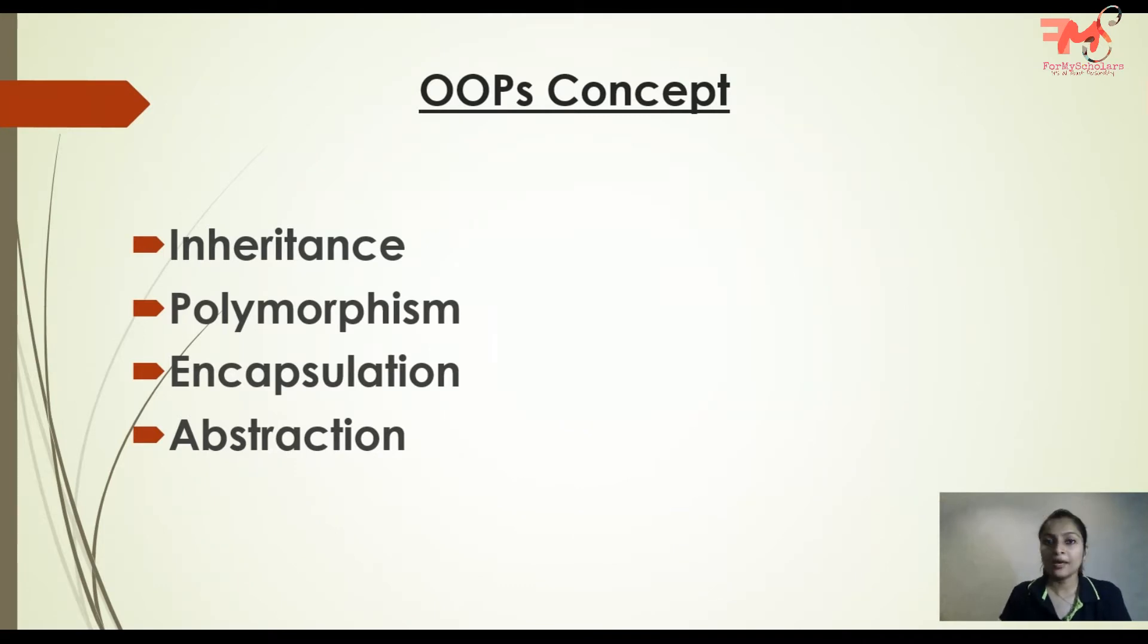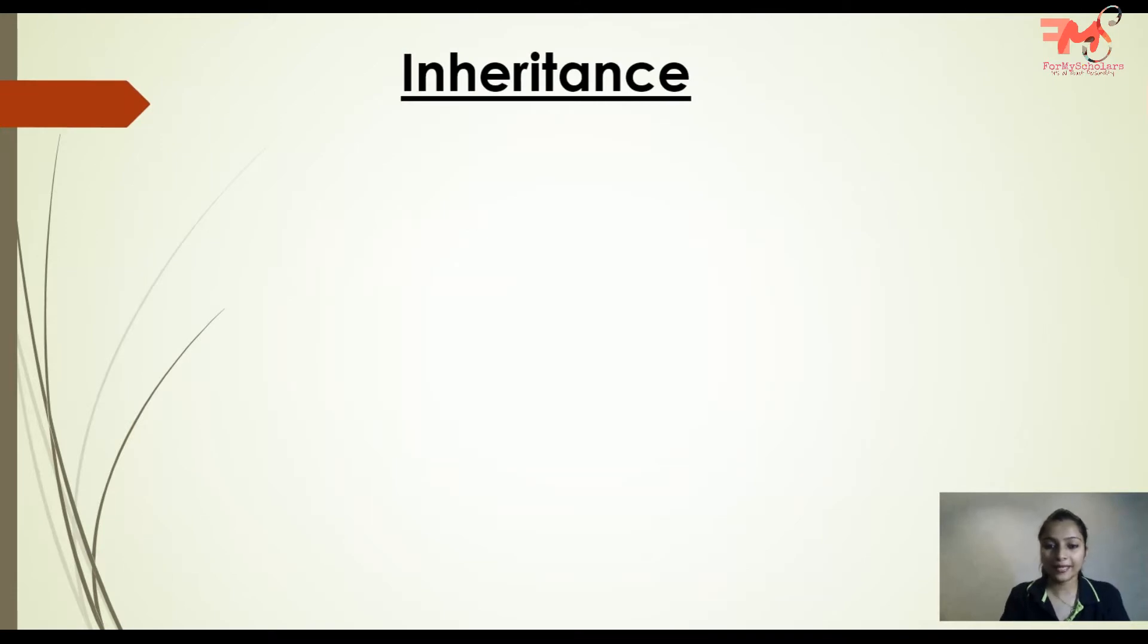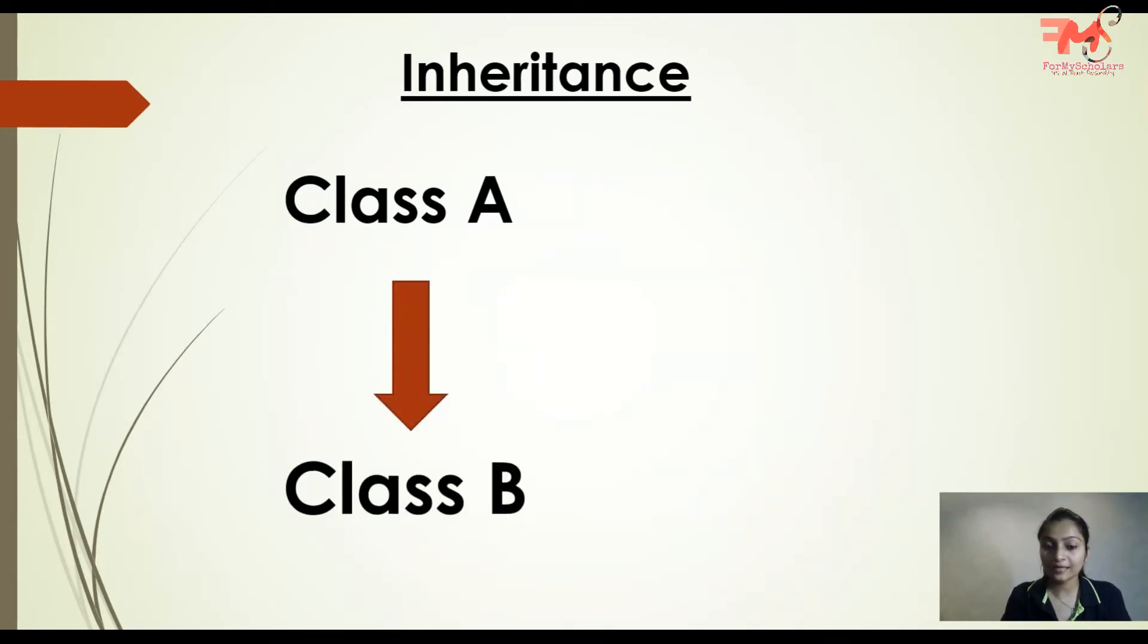First one is inheritance. Let's suppose we have a class A, and we have another class B. B wants to use some code or functions from class A. So there are two options: first option is that class B creates those same functions again and constructs them, and second option is to reuse the functions of class A.